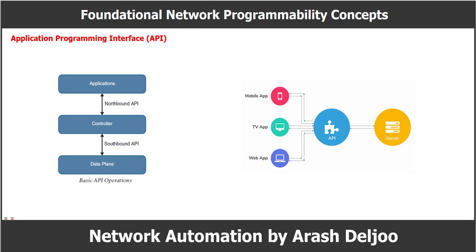In this figure, we can see the basic operation of Northbound and Southbound APIs. In a controller, we have the Northbound API, which allows us to communicate with the controller through applications. The controller then uses the Southbound API to connect to the fabric or data plane. We can send our configuration and monitoring requests to the controller with the Northbound API, and the controller sends them via the Southbound API to the data plane.